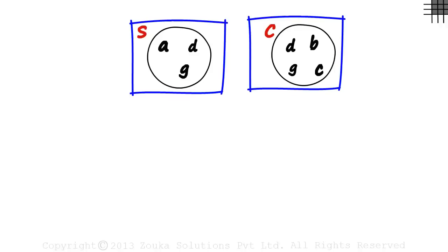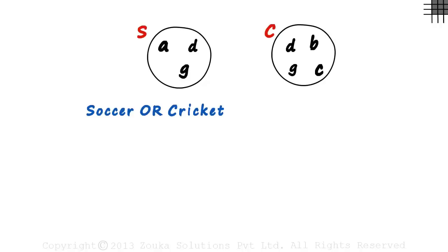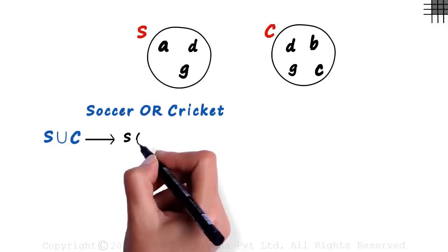Looking at these sets, could you write the set of people who like soccer or cricket? This means that we have been asked for the set of people who like at least one of these sports. We have to find S union C, which actually means S or C or both.